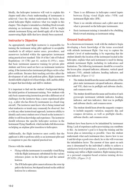The student should learn the names and locations of the pitot-static instruments — airspeed indicator, altimeter, and VSI — their use in pre-flight and airborne checks, and common errors. The student should learn the name and location of each gyroscopic instrument — attitude indicator, heading indicator, and turn indicator — their use in pre-flight and airborne checks, and common errors. The student should also learn about the magnetic compass, including magnetic variation, magnetic dip, and compass deviation, as well as pre-flight checks, airborne checks, and common errors. Students have been known to be intimidated by instrument flying; lack of experience and/or poor training can contribute to this.